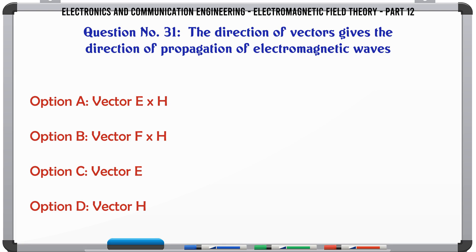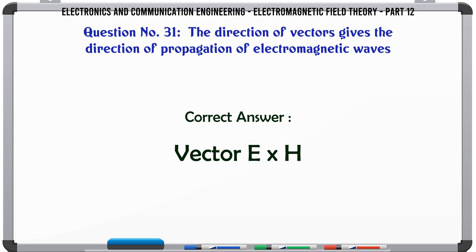The direction of which vector gives the direction of propagation of electromagnetic waves? A. Vector E×H, B. Vector F×H, C. Vector E, D. Vector H. The correct answer is Vector E×H.